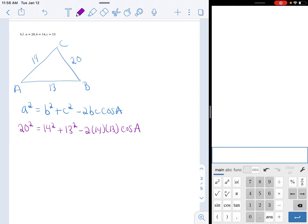So remember those aren't like terms like we discussed last video, so I'm going to combine what I can. 20 squared is 400, 14 squared plus 13 squared is 365, minus 2 times 14 times 13, 364 cosine A. Okay, again, I'm going to reemphasize, they're not like terms, so I have to subtract 365.